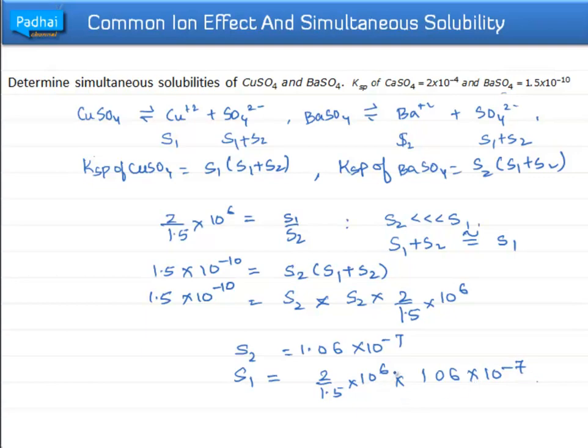That's all about simultaneous solubility. When we found a common ion in the two salts, we took the solubilities of SO4²⁻ from CuSO4 as well as BaSO4. Now, moving to common ion effect.